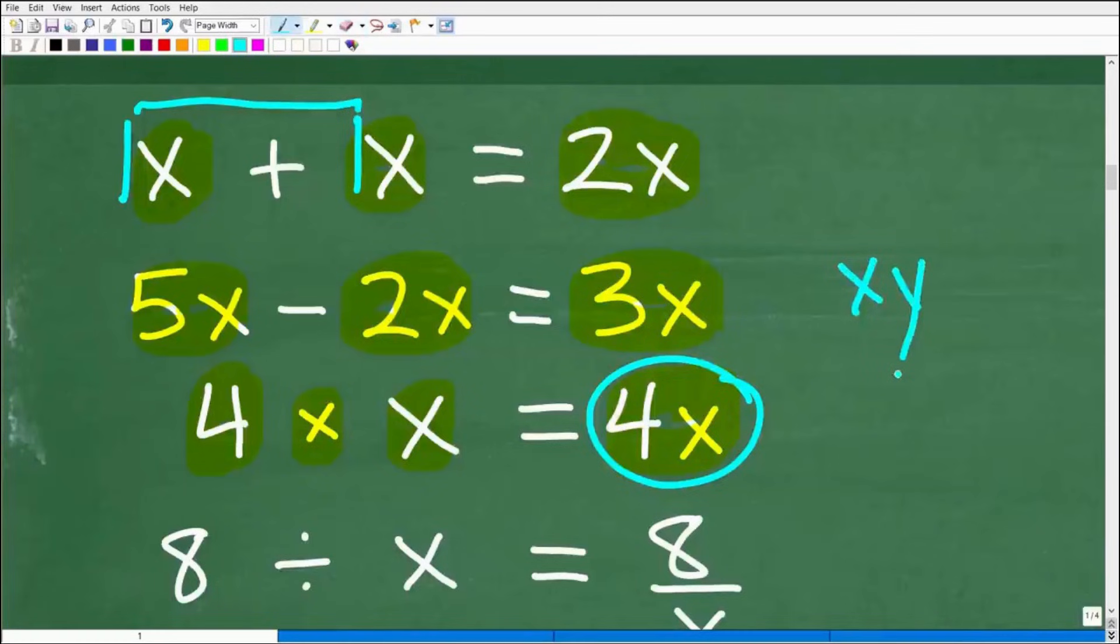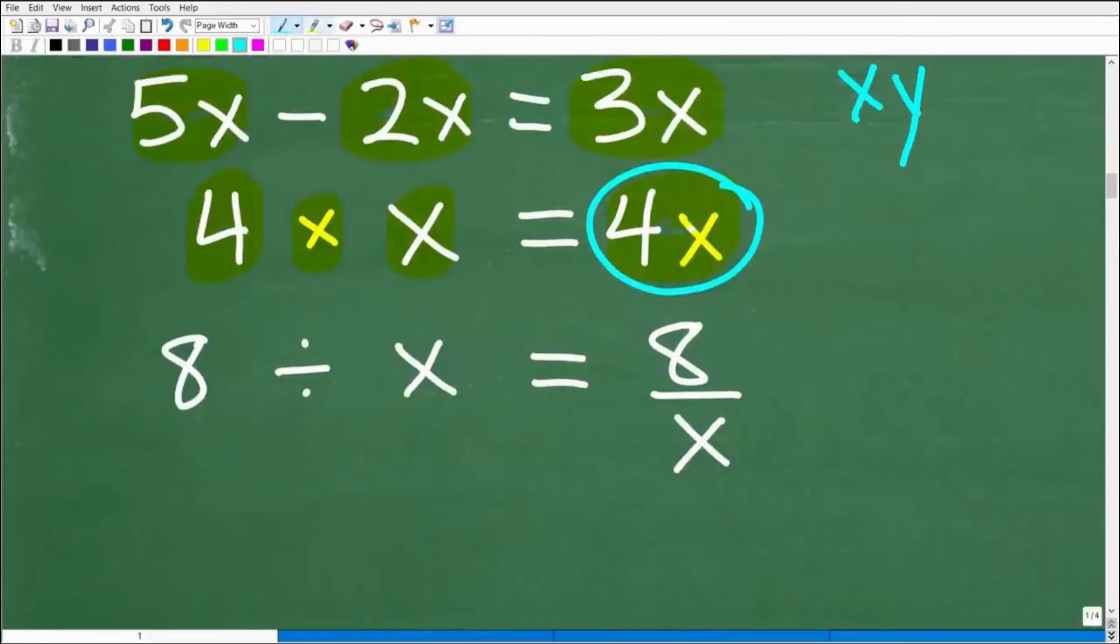And let's take another look at another example. How about XY? What do you think that means? Well, these two things are together. This means X times Y. So just a quick introduction to the language of algebra. And then here we have 8 divided by X. We can simply express that as a fraction, 8 divided by X. So again, just keep in mind that these variables are nothing more than numbers. So the rules of algebra are effectively the same rules of arithmetic. That's why it's so important to master basic math before you get into algebra.